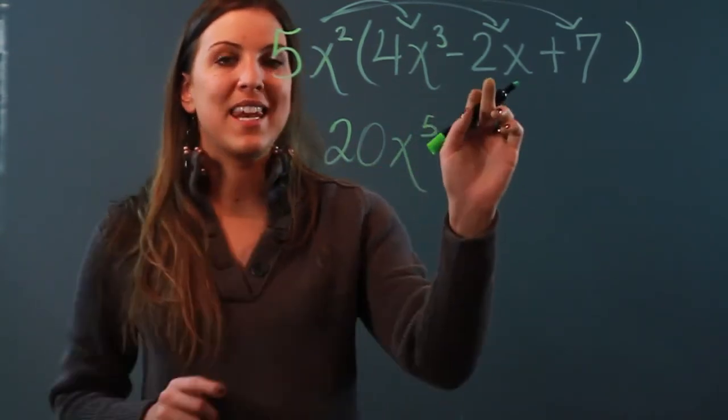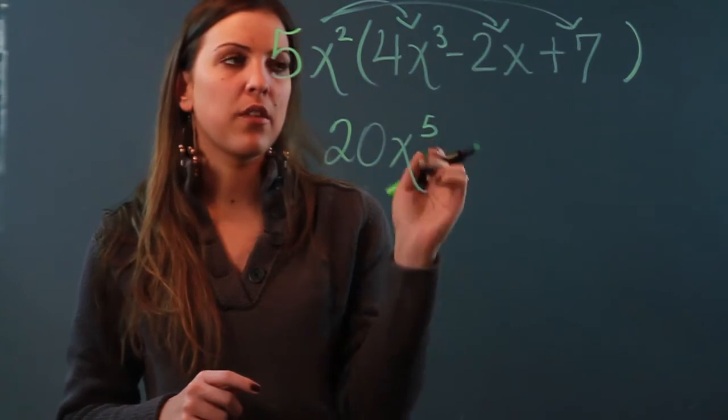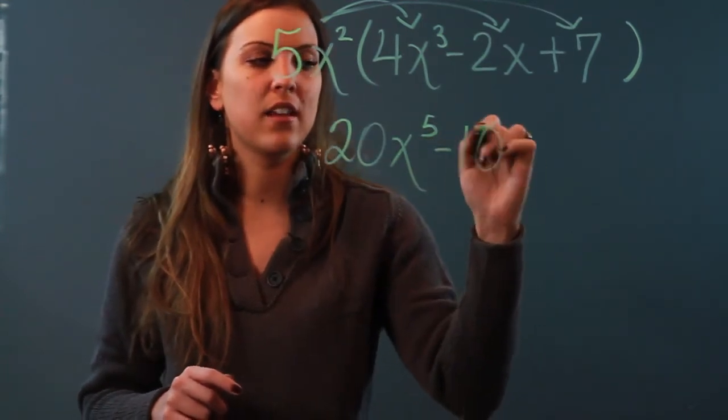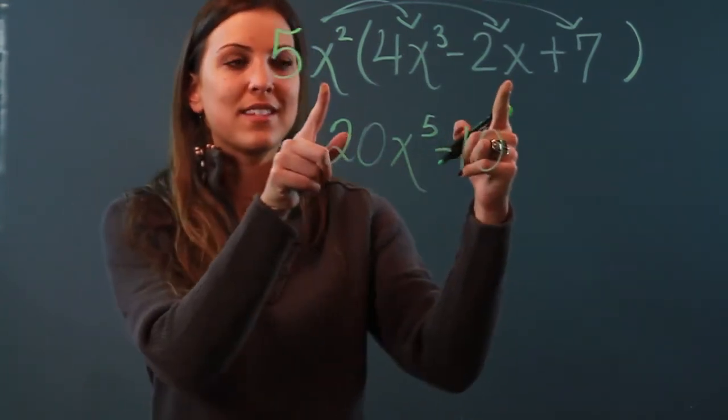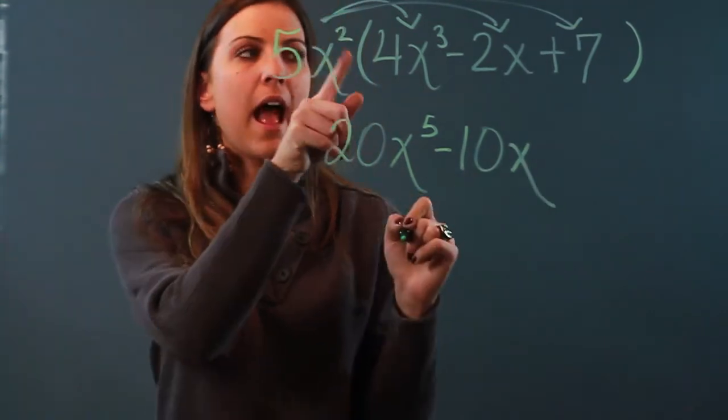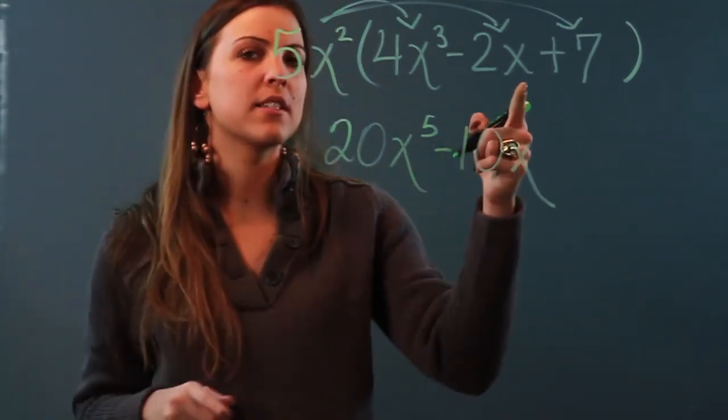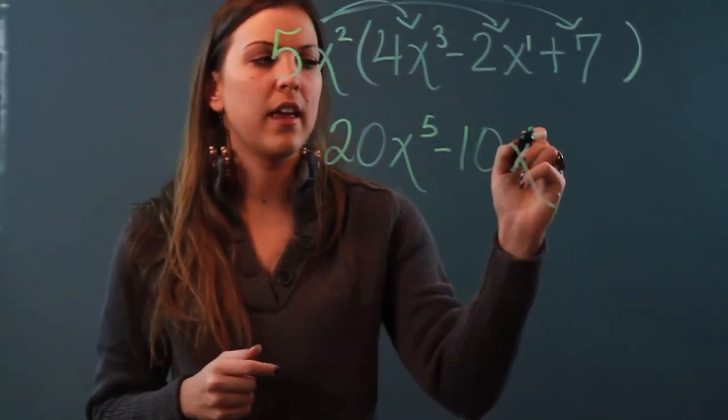My second term: 5 times negative 2, always keep the sign in front of the number, is negative 10. Check my bases. They are the same. So I keep the base, add the exponents. I'm adding 2 plus imaginary 1 and I get 3.